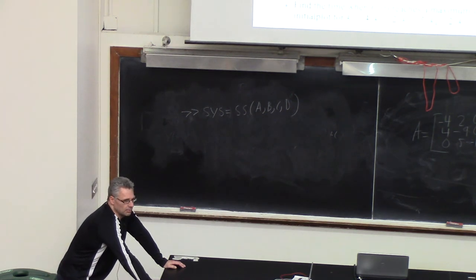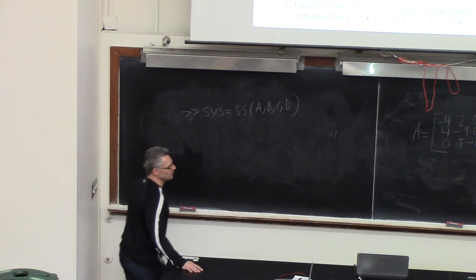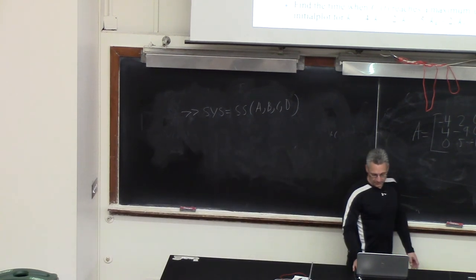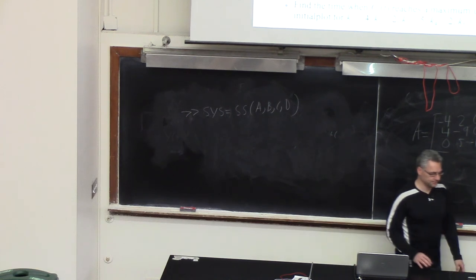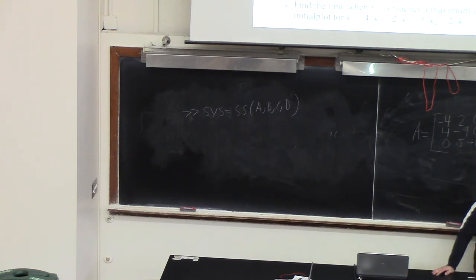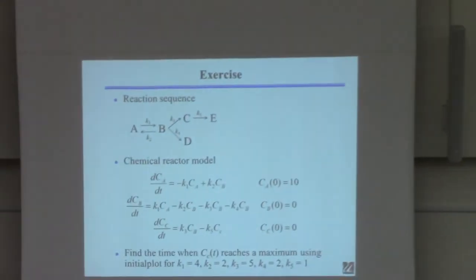That's pretty much the whole thing. All you've got to do now is use the 'initial' plot command, specify the initial condition vector as given, and run it.